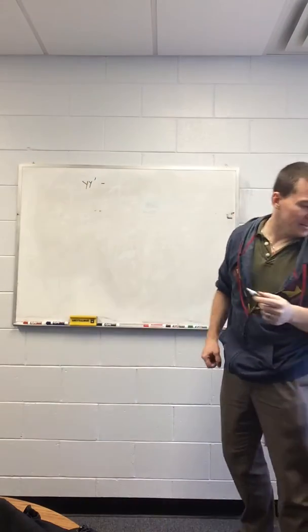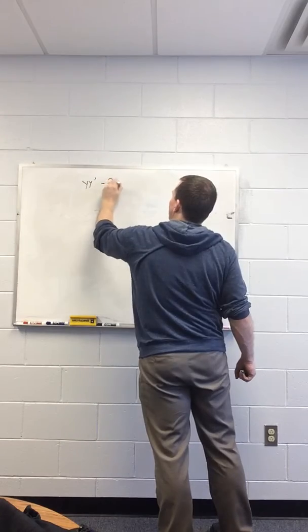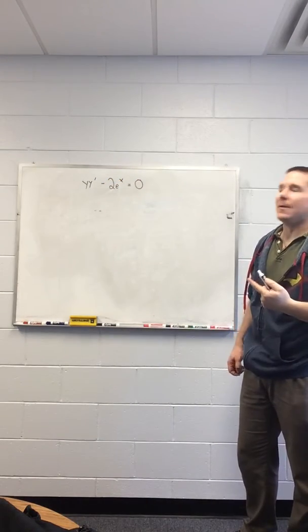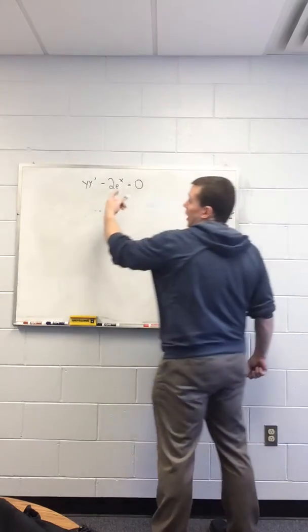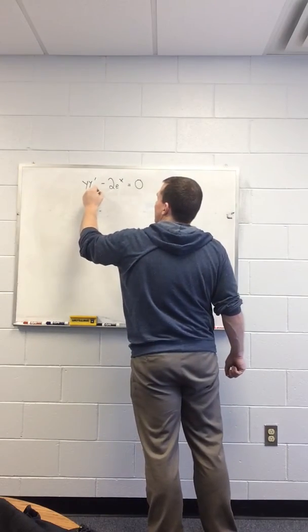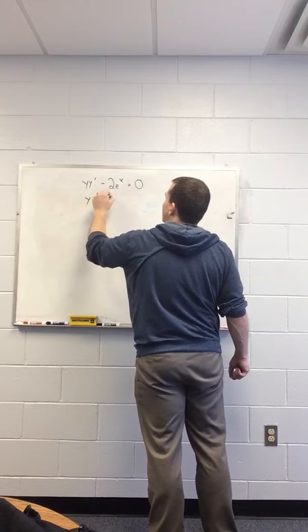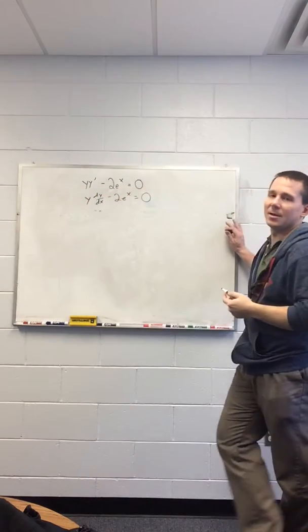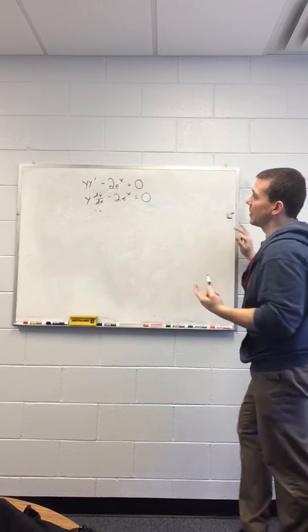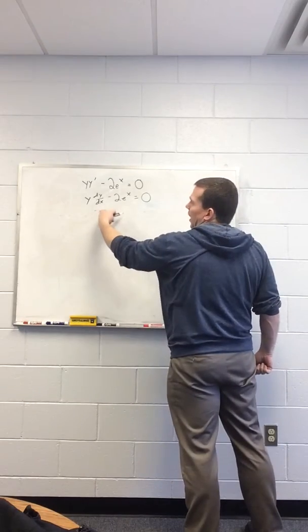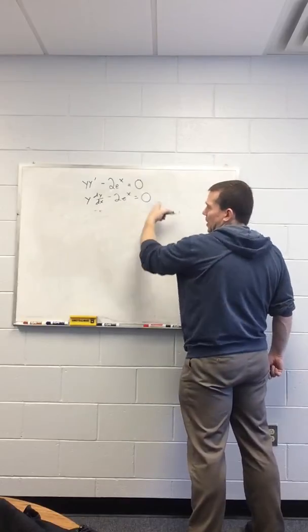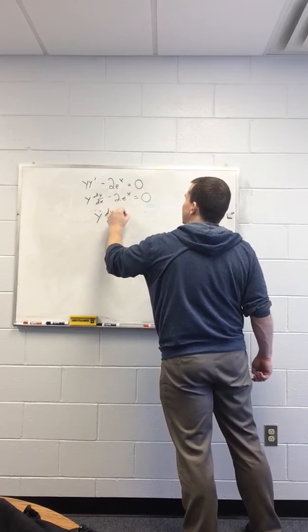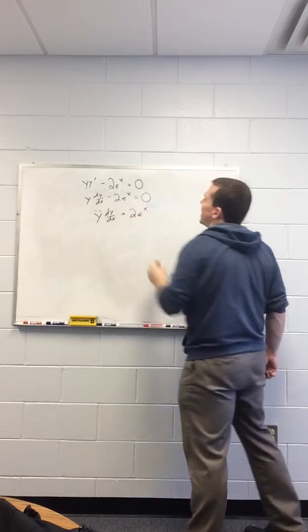y*y' - 2e^x = 0. If I want to solve that, we said the first step is to rewrite y' as dy/dx. So, y*dy/dx - 2e^x = 0. And now, separate the variables. In this case, I'm going to keep the y's on the left and the x's on the right. So, I'll just add the 2e^x over. So, I get y*dy/dx = 2e^x.